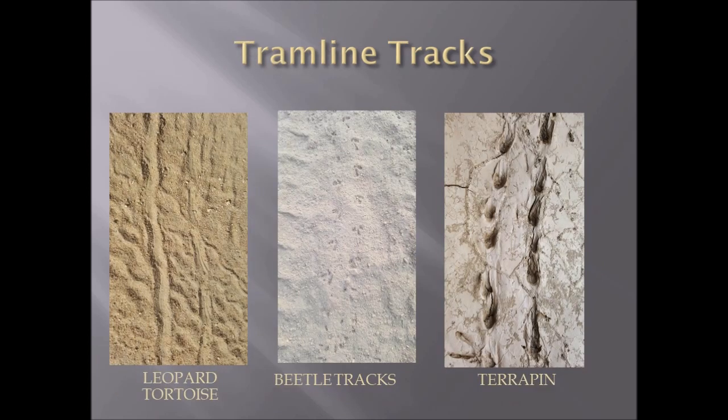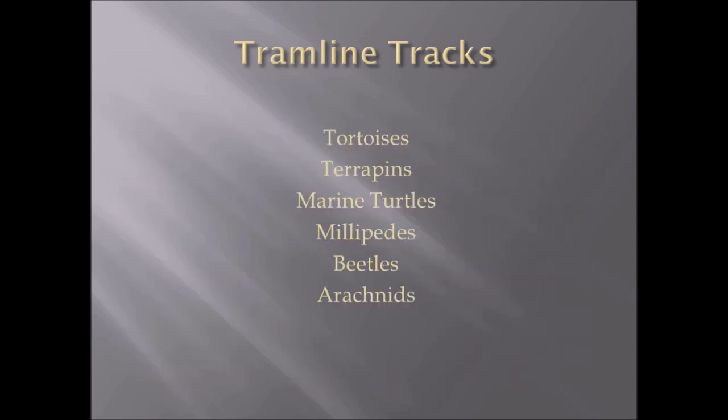Tram-line tracks: on the left are beetle tracks, in the middle terrapin tracks, and on the right freshwater turtle tracks. Tram-line tracks essentially form two parallel track sequences because of the usually squat nature of the animal, so its feet move on either side in a tram line. Examples of animals with tram-line tracks include tortoises, terrapins, marine turtles, millipedes, beetles, and arachnids.